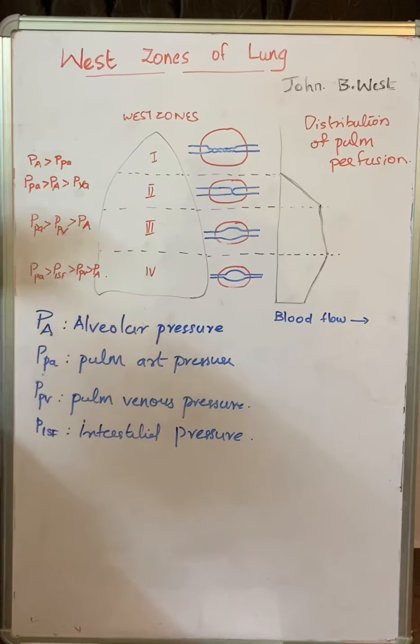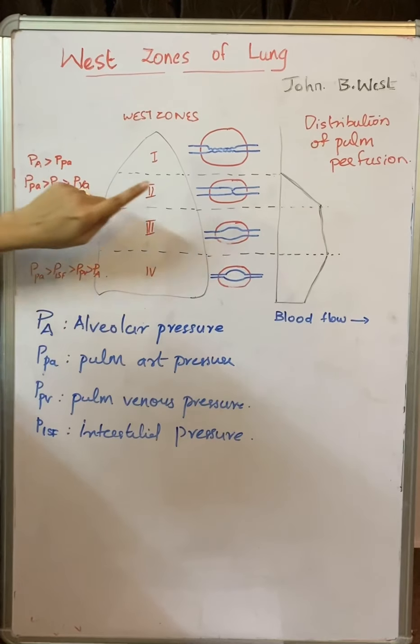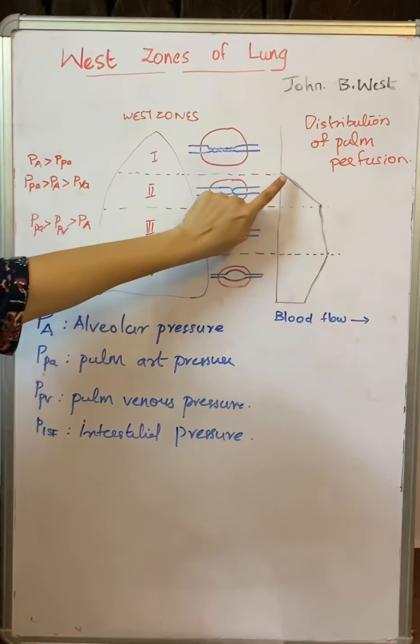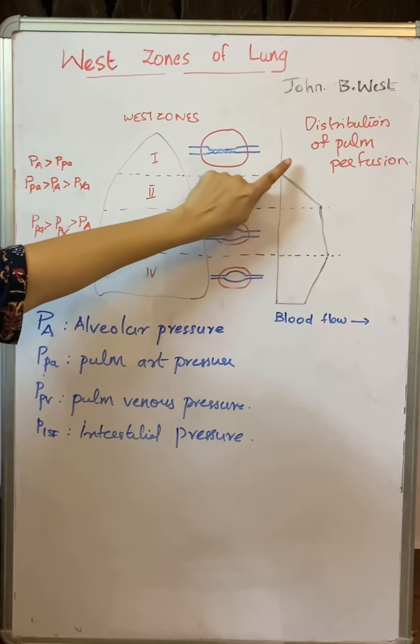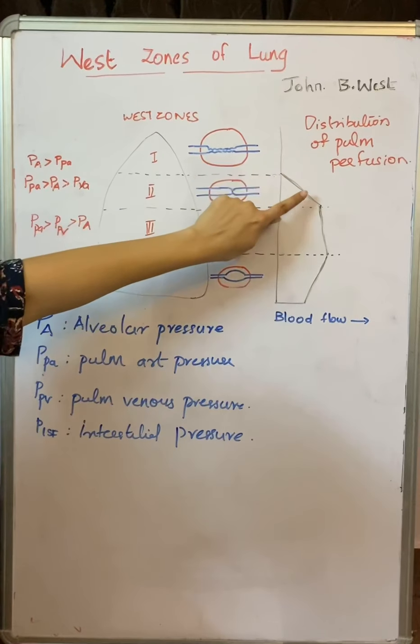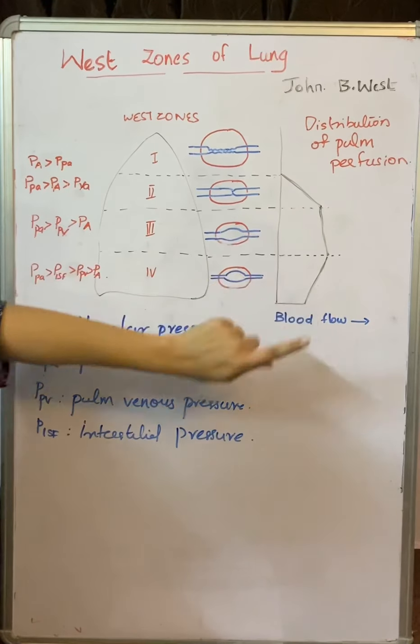These are the four West Zones of the lung and how blood flow is distributed in Zones 1, 2, 3, and 4. Thank you.